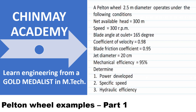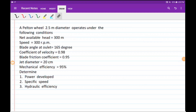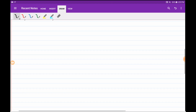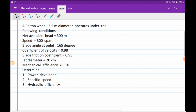In this video we'll try to understand how to solve examples on Pelton wheel. In this particular example we have to find out the power developed or brake power, the specific speed of the turbine, and the hydraulic efficiency of the turbine. The problem is solved on a Samsung Galaxy Note. We have a Pelton wheel of 2.5 meter diameter operating under given conditions.